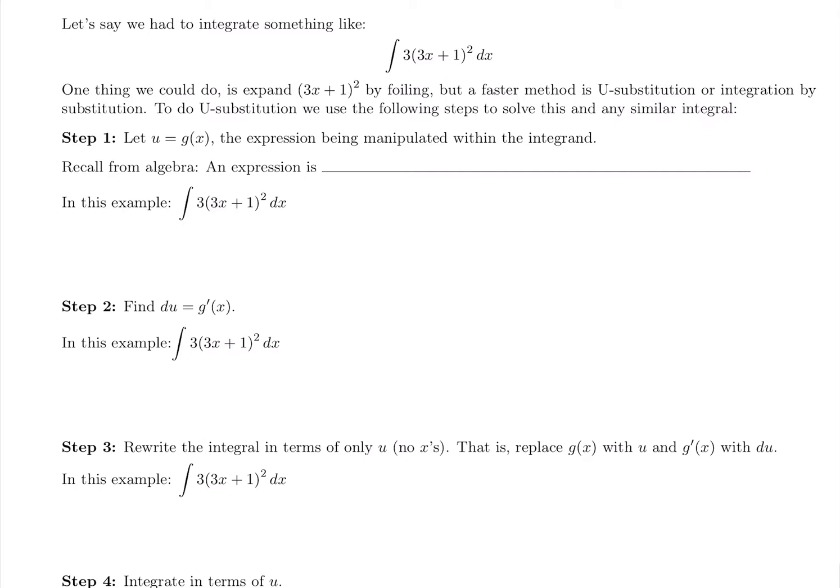One thing we could do is expand (3x + 1)² by foiling it and then multiplying everything by 3. You could do a bunch of algebra to avoid u-substitution, but it would take a lot longer. So we're just going to use this anytime we see a product, quotient, or chain.